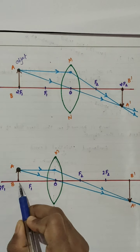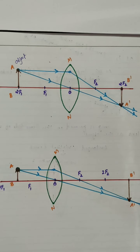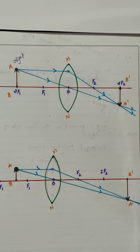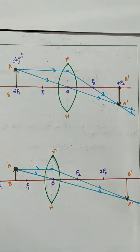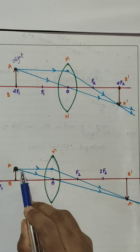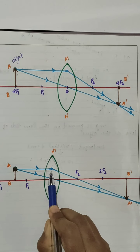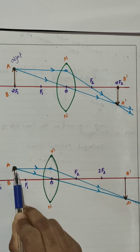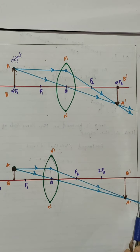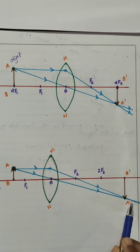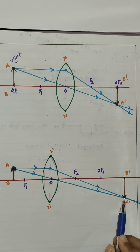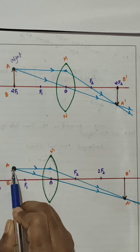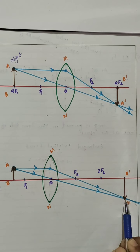Next we are keeping the object between F1 and 2F1. Object is AB. The first ray is parallel to the principal axis; after refraction it passes through F2. The second ray comes from the same top part of the object and passes through the optical center, so there is no deviation. Both rays intersect at a point, giving the image of the top part of the object.